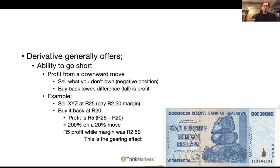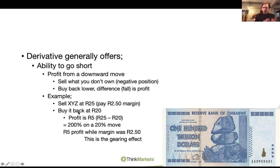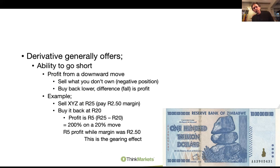The other key point of derivatives is the ability to go short - making a profit from a downward move. The previous example was a traditional vanilla long trade. You bought at 25, it moved to 30, you took your profit. If it had moved to 20, you would have incurred a loss. Going short is where we're now making money from a downward move. You effectively sell what you don't own, so you have a negative position. If you buy 10 shares it shows you own 10; you short 10, it shows minus 10. And if that price falls, you buy back at a lower price, and that difference becomes your profit.